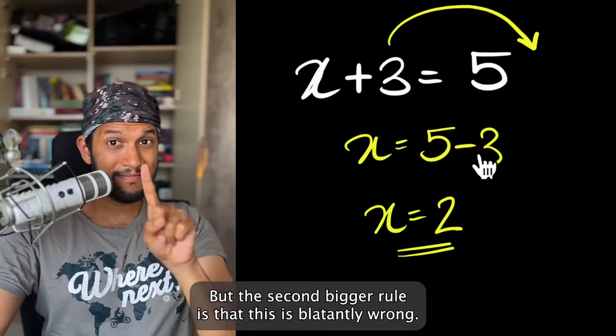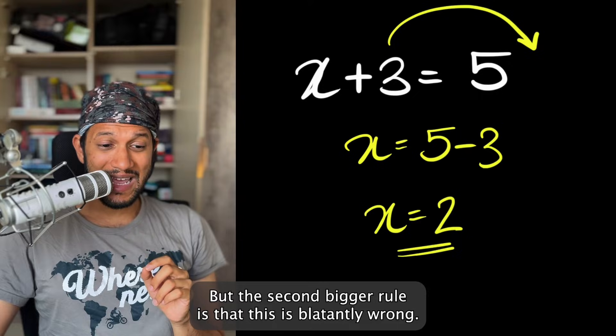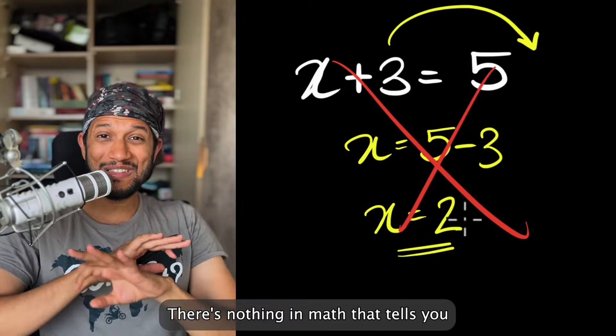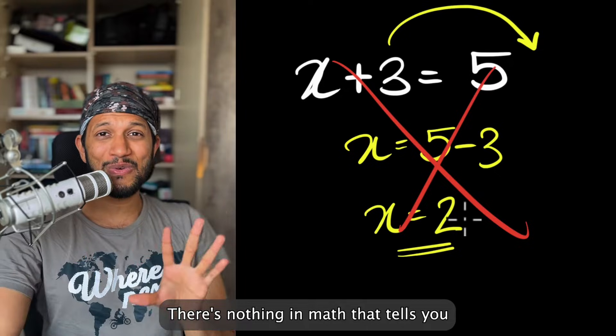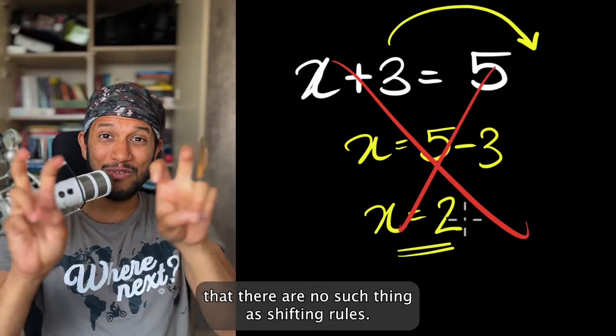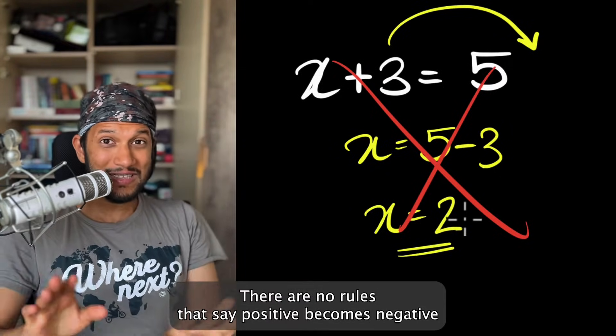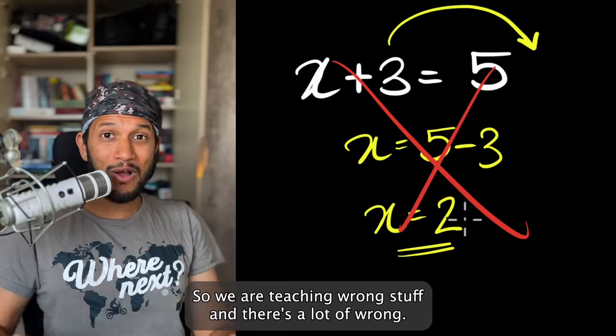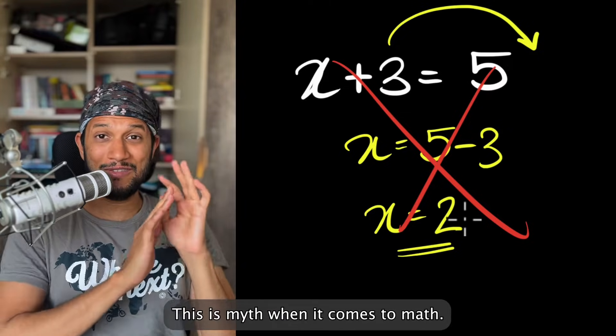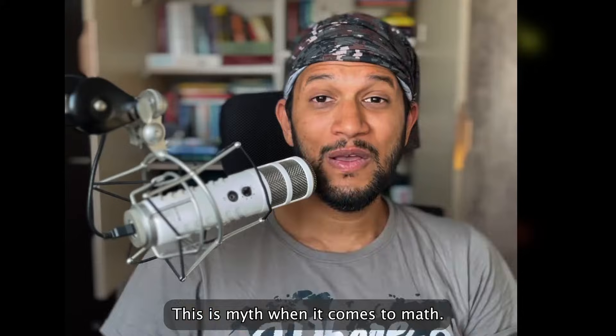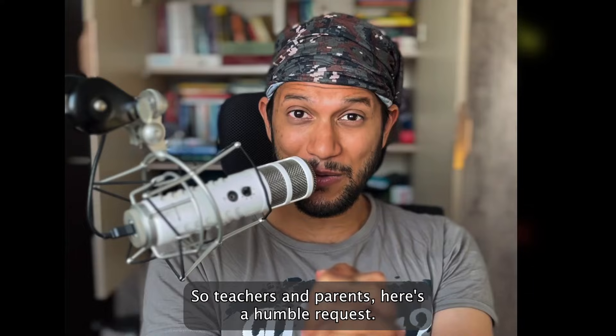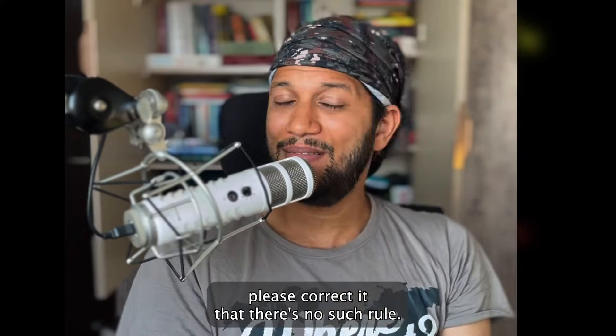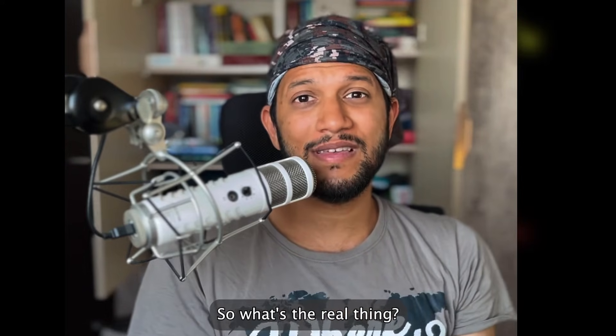But the second bigger problem is that this is blatantly wrong. There is nothing in math that tells you that there are such things as shifting rules. There are no rules that say positive becomes negative when it goes from left to right. No, this is wrong. So we are teaching wrong stuff and there's a lot of this myth when it comes to math. So teachers and parents, here's a humble request. Whenever you see somebody shifting, please correct it that there's no such rule. So what's the real thing?